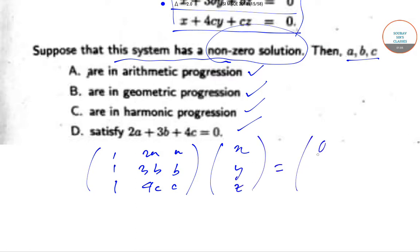This equals [0, 0, 0]. Now, we know that this system has a non-zero solution. That implies the rank of this matrix, which we can call matrix A, is less than or equal to 2.